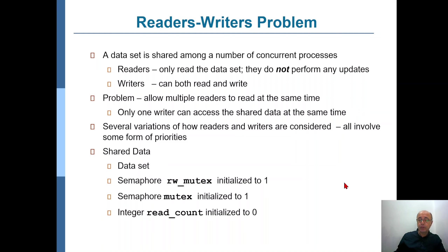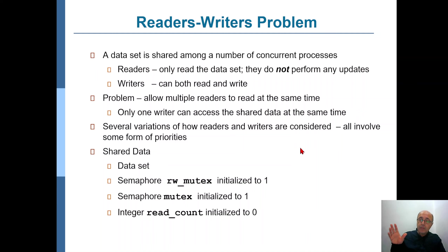There are several variations of the readers-writers problem. We use a 'read_write_mutex' initialized to one, another 'mutex' initialized to one, and 'read_count' initialized to zero. Read_count is the number of readers currently reading from the data set — initially zero since no readers are active. The read_write_mutex ensures either one writer and no one else, or if readers are present, the writer waits until those readers complete. The mutex ensures mutual exclusion while dealing with these data structures.